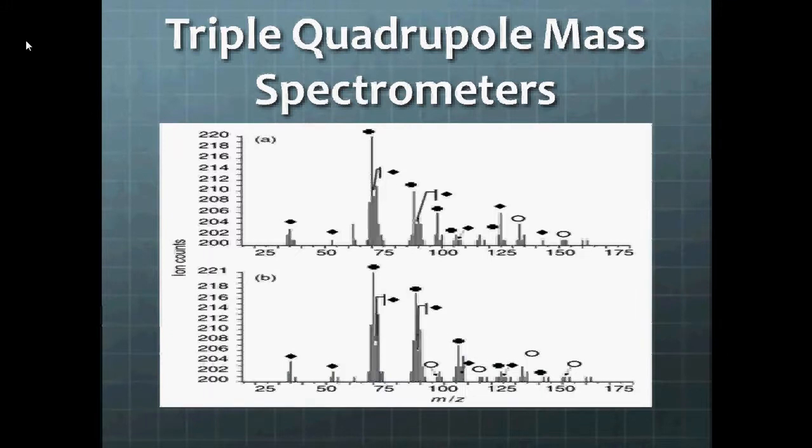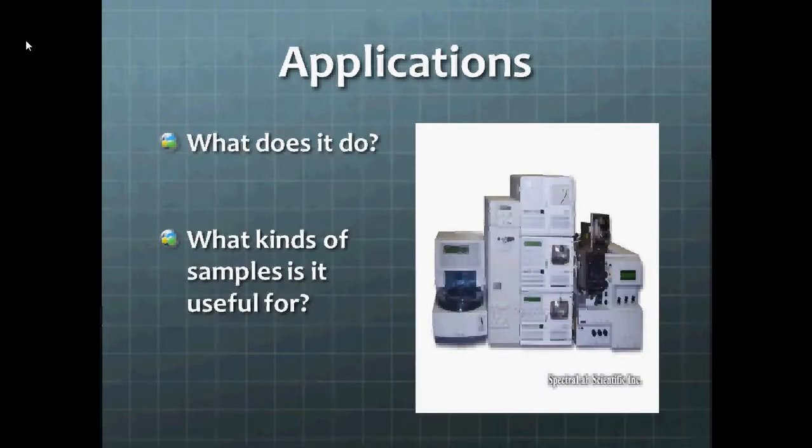Hi, I'm Steven Sutton and today I'm going to talk about a type of tandem mass spectrometry: triple quadrupole mass spectrometry. So what is it? Well, as the name implies, it's a mass spectrometer and it sorts analytes according to mass to charge ratios.